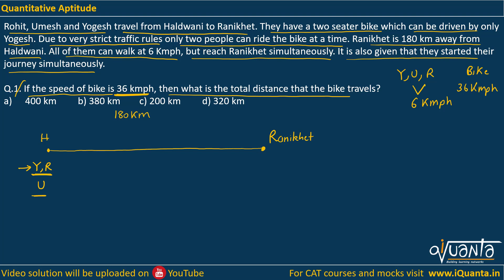First, Yogesh will take Rohit to a particular point between Haldwani and Ranikhet and drop him there. Yogesh will then come back from that point and pick up Umesh from somewhere between Haldwani and Ranikhet, since Umesh is also walking at 6 kmph. He picks up Umesh and moves directly towards Ranikhet. Meanwhile, Rohit walks on foot towards Ranikhet. All of them reach Ranikhet simultaneously.